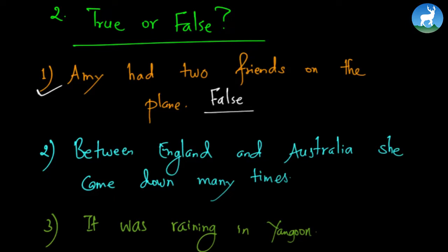Moving on to second question, between England and Australia, she came down many times. Of course not. She came down only once and that also in Yangon. And it was raining in Yangon. Of course it was raining. It was in fact raining very heavily, quite heavily, in the capital of Myanmar.